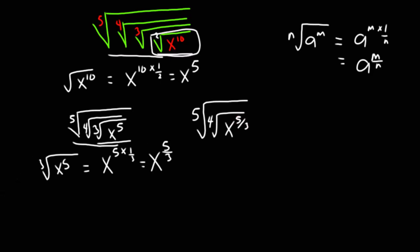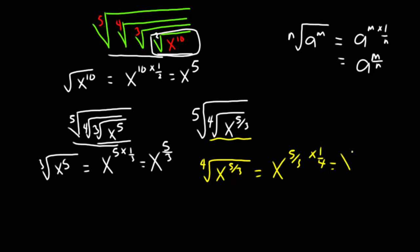Once again I'm going to reduce this by focusing on the fourth root. The fourth root of x exponent 5 over 3, according to the property, gives us x exponent 5 over 3 times 1 over 4, which gives us x exponent 5 over 12, because 3 times 4 gives us 12. So I'm going to reduce this whole thing since I've now resolved the fourth root of x exponent 5 over 3.